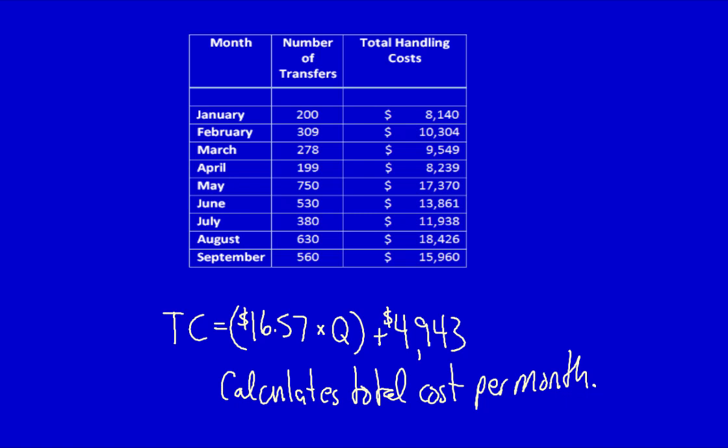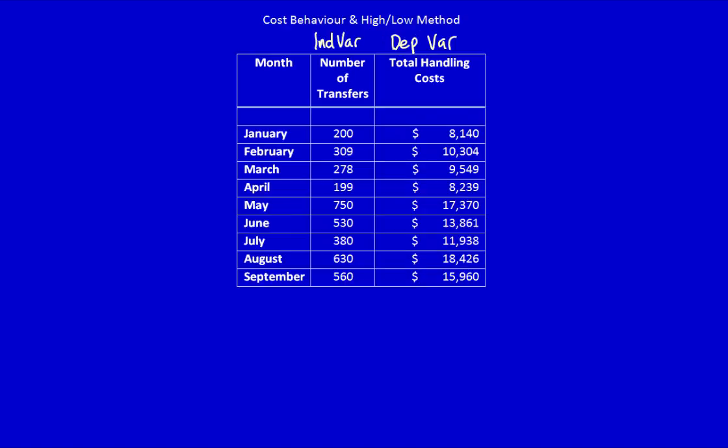Say I want to find out what would be the estimated cost of material handling if we had 700 transfers of materials. Let's go back to our original chart. Notice on our original chart, we never used 700 transfers. I can use our cost formula in order to predict what will be the total handling costs if the number of transfers was 700. Let's calculate it.